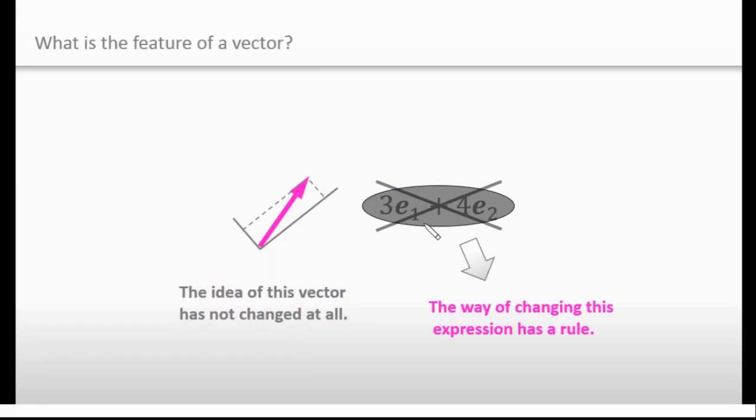The way of changing this expression follows a rule. Which is this rule. And actually, it is vice versa. I mean, if something follows this rule, it will be what we can call a vector.